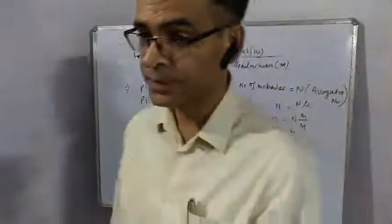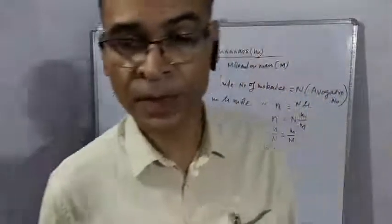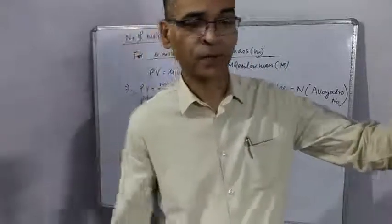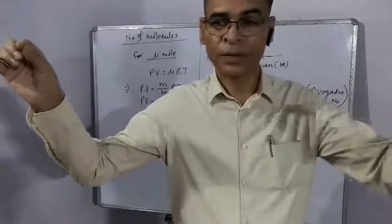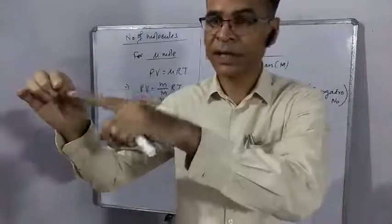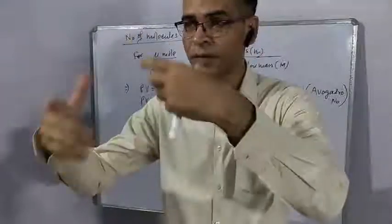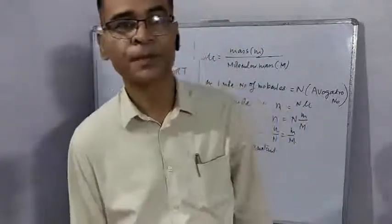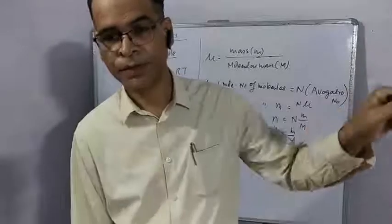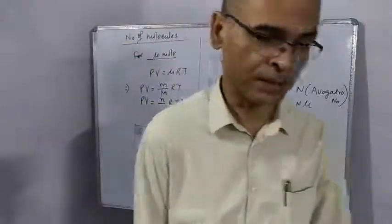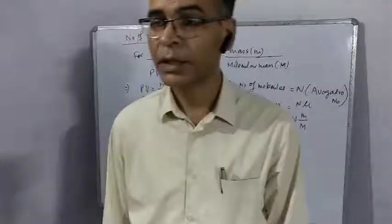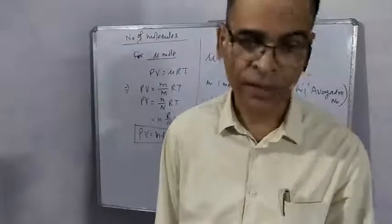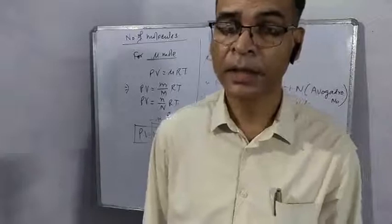Time taken for collision is negligible with respect to time taken for two successive collisions. Suppose one molecule comes to collide with another molecule, so some time is taken. During collision the two molecules are in contact. So that time is negligible with respect to time taken for molecule which is coming for collision. So these are some points. You go through these points and keep them in your mind because these points will help you in understanding new derivations.